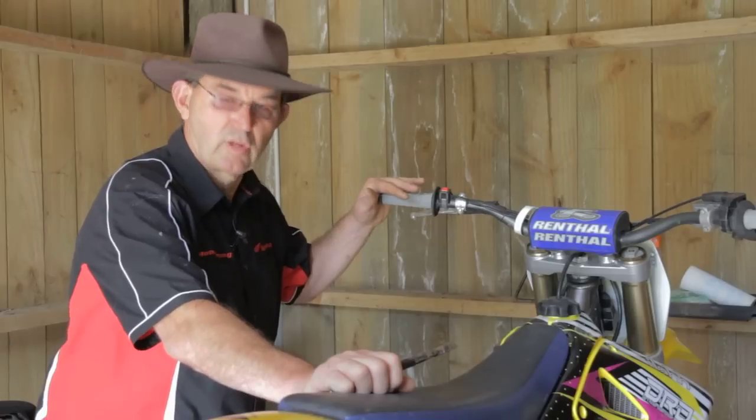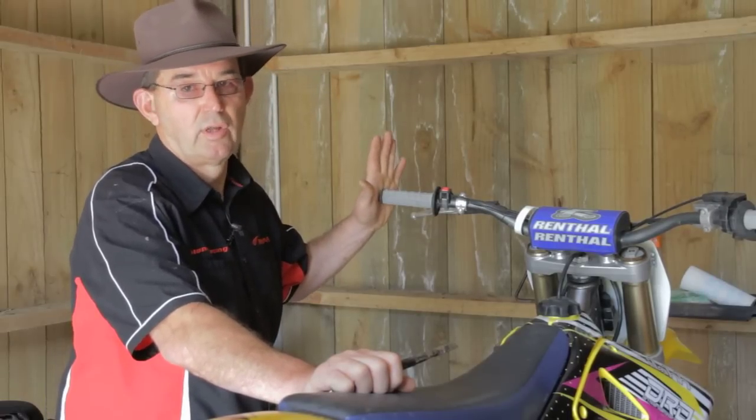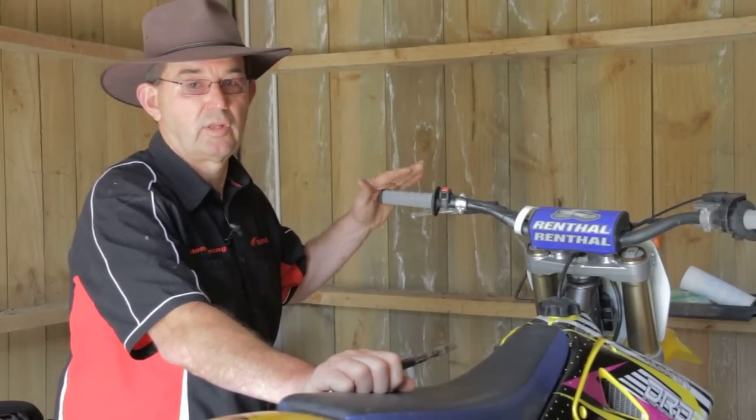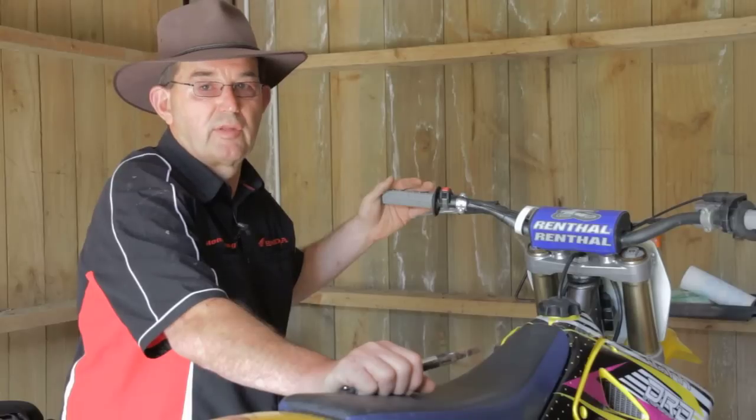Now there's no point lock wiring your grips on if you haven't glued the grips on first. The lock wire does not hold the grips on or stop them from turning. What the lock wire does is it holds the grip in place and stops the glue from lifting.